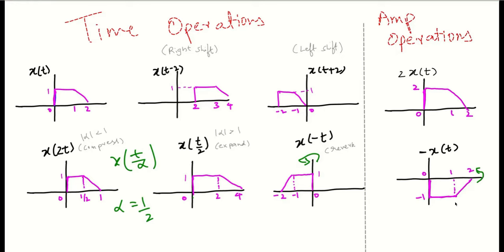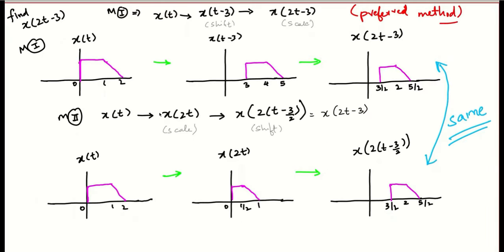Here we saw how we perform different time operations and amplitude operations. Amplitude operations are very simple; time operations at times are slightly tricky. In this question, we are asked to find x(2t minus 3), and x(t) is given. We can do this in two ways. First, we can shift x(t) by 3 units to get x(t minus 3), and then scale it by a factor 2. So x(t minus 3) becomes x(2t minus 3). Please keep in mind the important note — it becomes x(2t minus 3) and not x(2t minus 6).